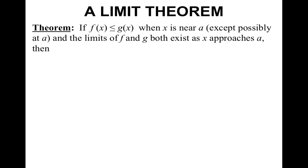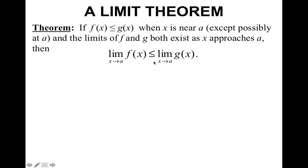We're going to start off with a limit theorem. It doesn't have a special name, but it says that if a function f is less than or equal to g of x when x is near a, except possibly at a, and the limits of f and g both exist as x approaches a, then the limit as x approaches a of f of x has to be less than or equal to the limit as x approaches a of g of x.